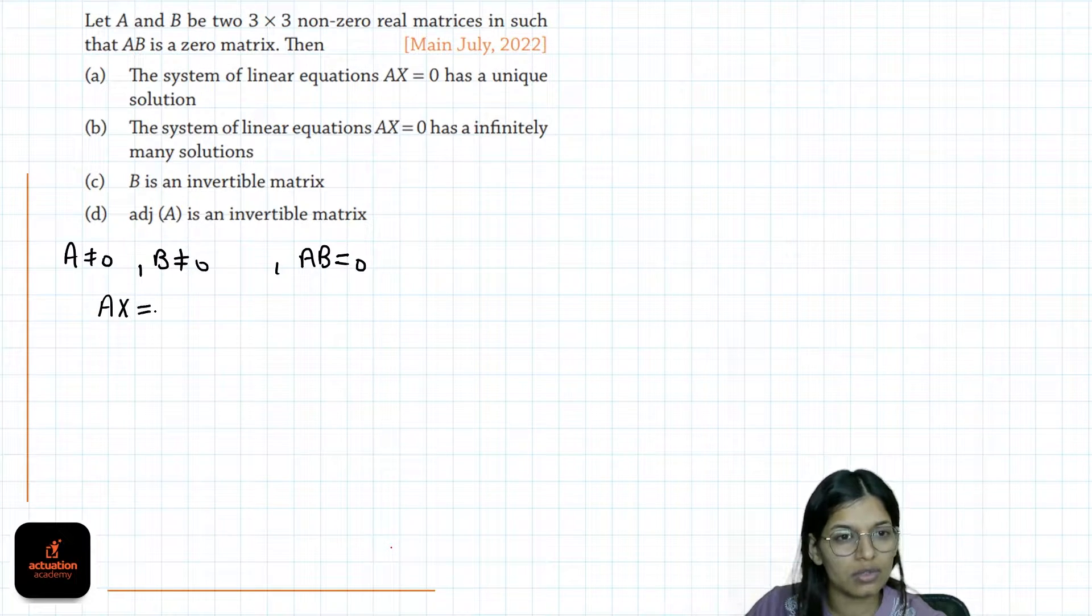For AX equals 0, given AB equals 0, we can take the determinant. So determinant of AB will be 0.